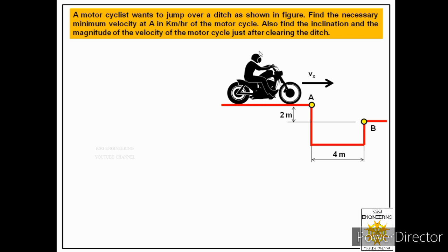The motion of the motorcyclist from point A to point B will be considered as projectile motion. Whenever we deal with projectile motion, we talk about two types of motion: one along horizontal and one along vertical. The horizontal motion of a projectile is uniform motion — without the effect of acceleration due to gravity — and the vertical motion is uniformly accelerated motion.